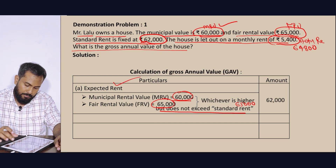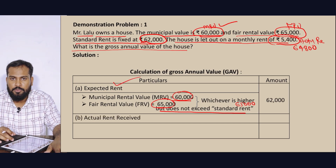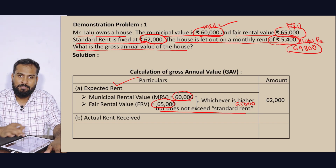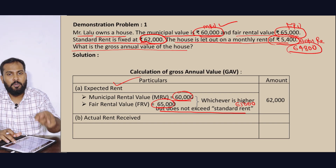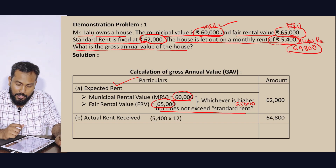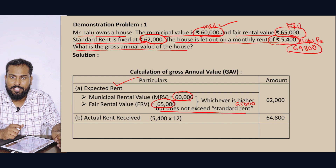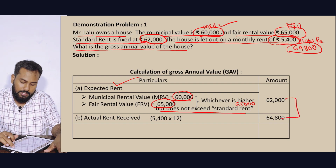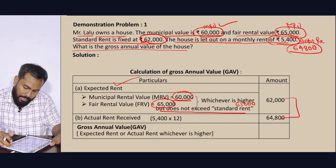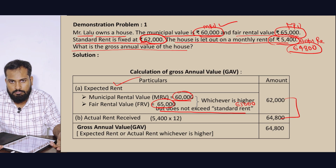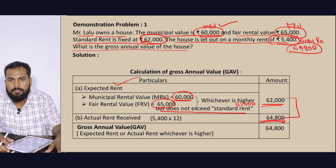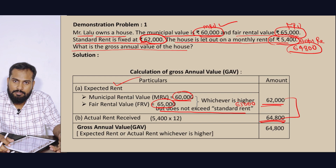Then the actual rent received: 5,400 x 12 is equal to 64,800. In this case, who is higher? Gross Annual Value is 64,800 — 62 vs 64, whichever is higher. Okay, it's not simple.